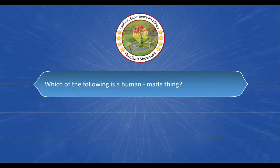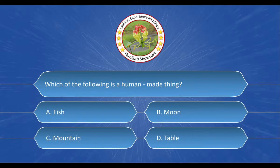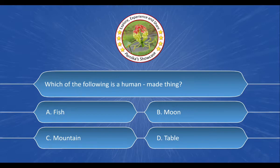Next question: which of the following is a human-made thing? The options are: a) fish, b) moon, c) mountain, d) table. The correct answer is option d) table.